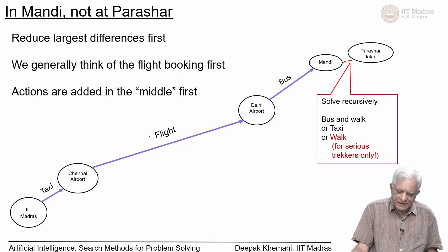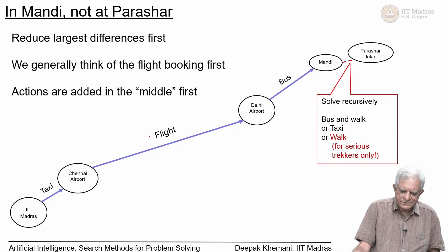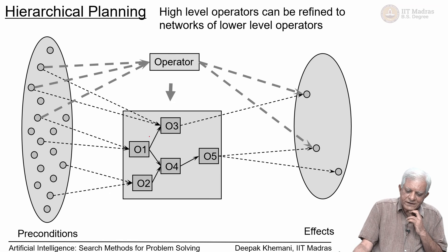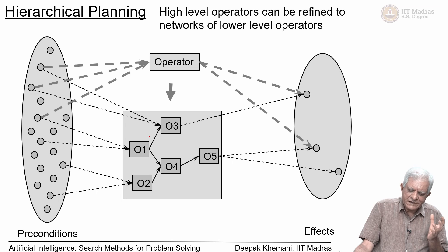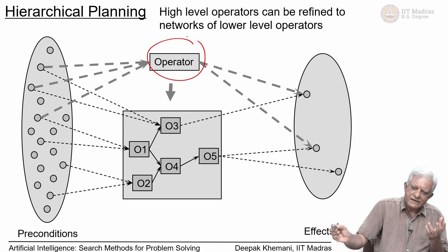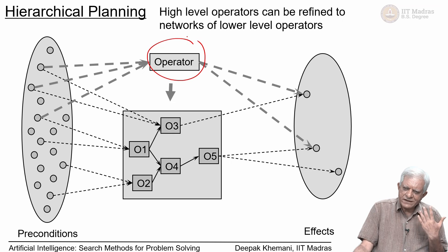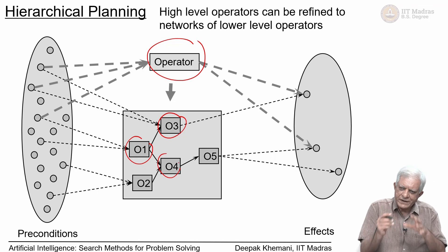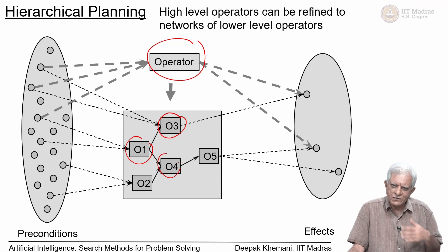We will come back to means-ends analysis a little bit later in a slightly different context. Another way we do planning is hierarchical planning: you say you are planning a holiday to Himachal — that is a high-level operator. You check its preconditions, such as having money to travel and leave to travel, and then do the detailed planning. You break down a high-level plan into lower-level plans; hierarchical planning is something we do very often.